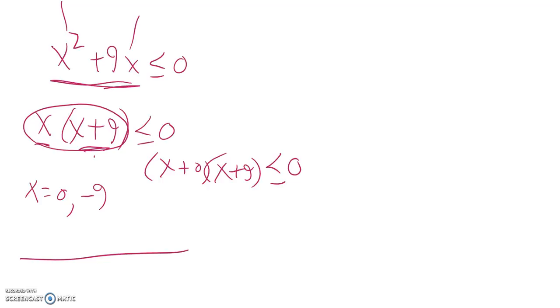But anyways, there's my boundary points. There's a negative nine, there's a zero. Now I want to test some regions. I can't test zero because it's one of my boundaries, so how about I just test something positive. Let me test five. So five squared plus nine times five - that's definitely bigger than zero. And I want things less than zero, so five doesn't work. So my solution is going to be in here.